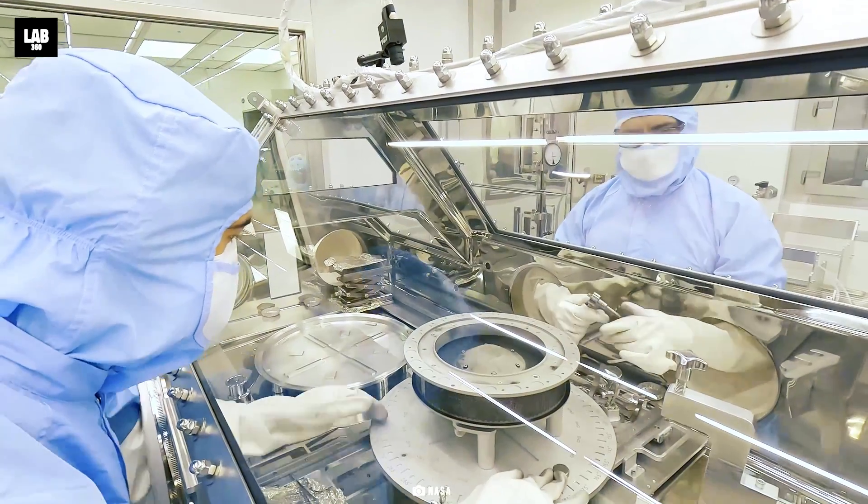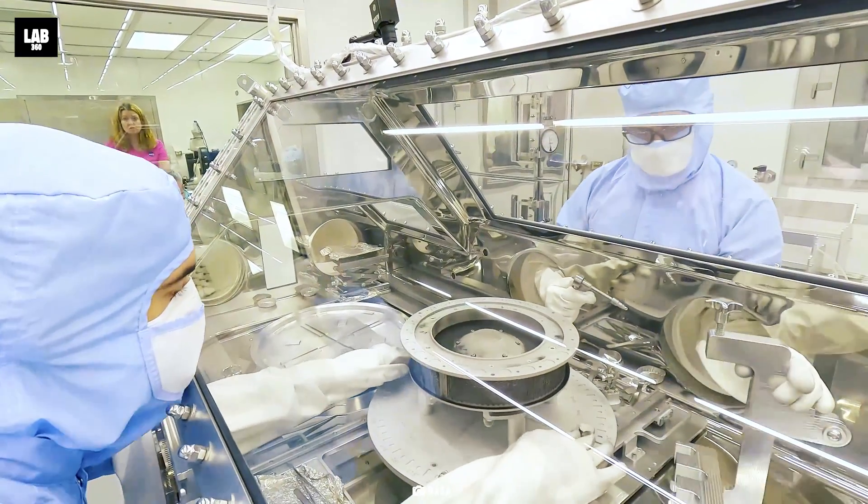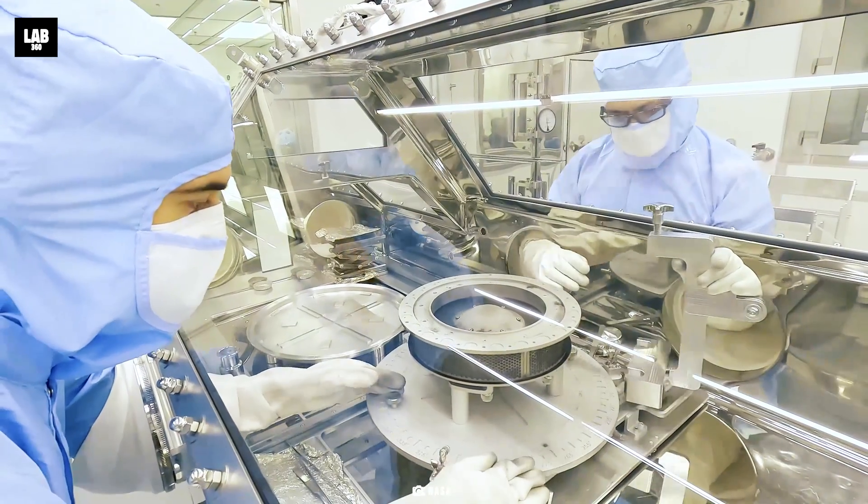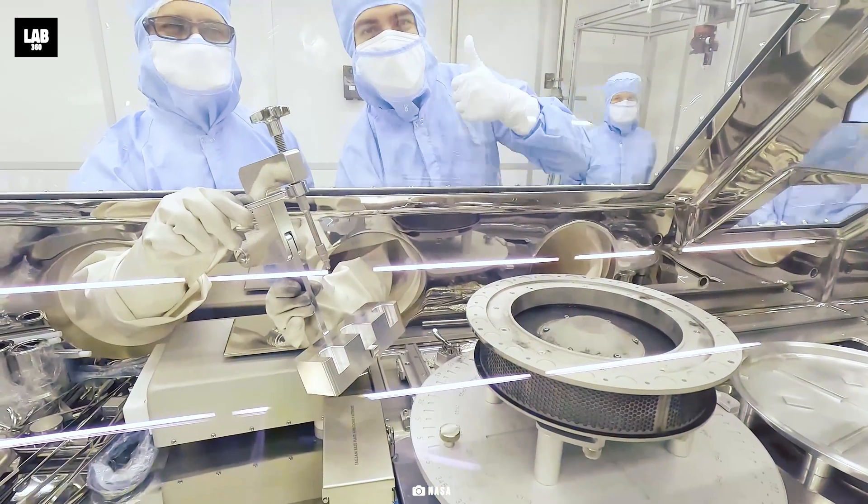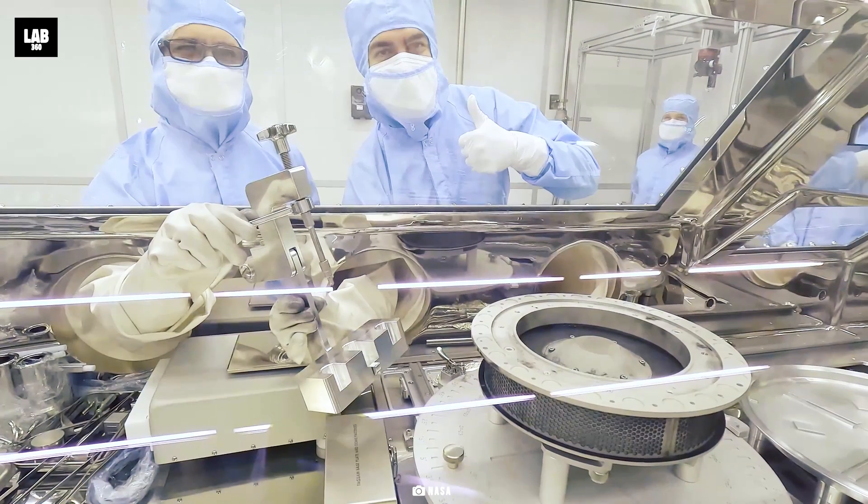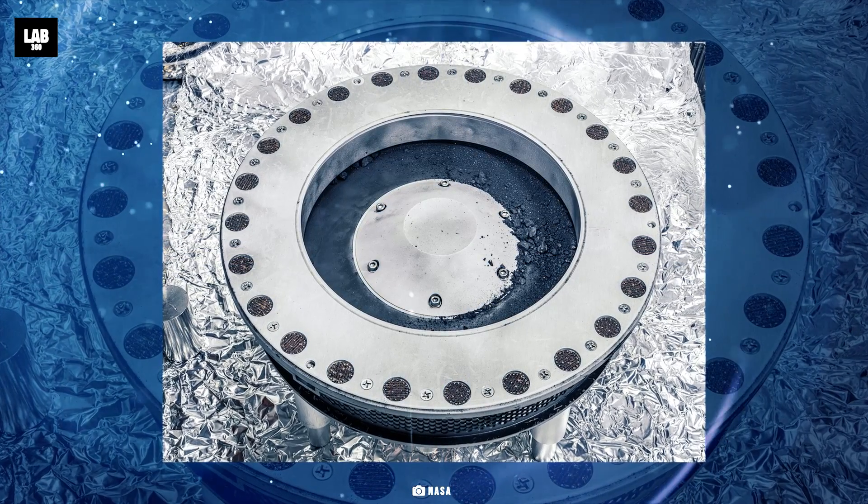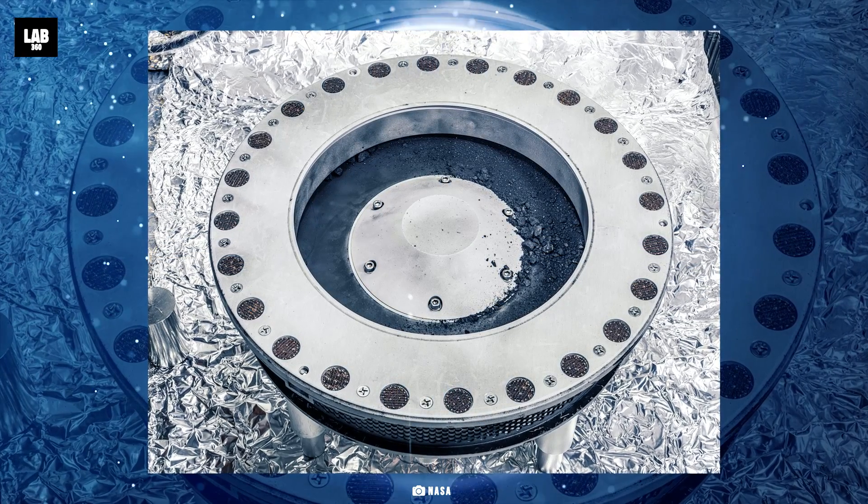Post that, they will be removing the round metal collar and transfer the remaining sample from the Touch-and-Go Sample Acquisition Mechanism, also known as TAGSAM, head into pie wedge sample trays. The remaining material includes dust and rocks up to about 0.4 inch in size.